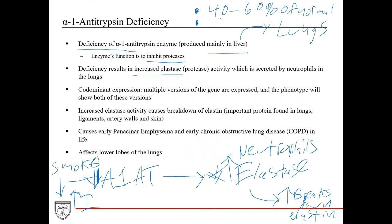There is a more severe form where patients have less than 15% of normal levels. For these patients, even if they don't smoke, they still develop early emphysema — though smoking makes it significantly worse. This disease also exhibits codominant expression, meaning multiple versions of the gene are expressed and the phenotype shows both. This leads to early panacinar emphysema, which results in developing early chronic obstructive pulmonary disease, or COPD, causing early mortality and significant limitations.